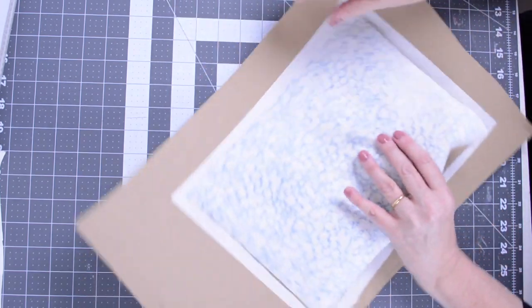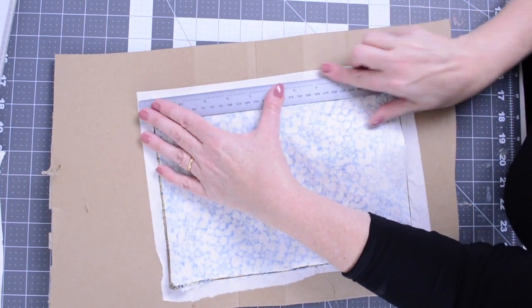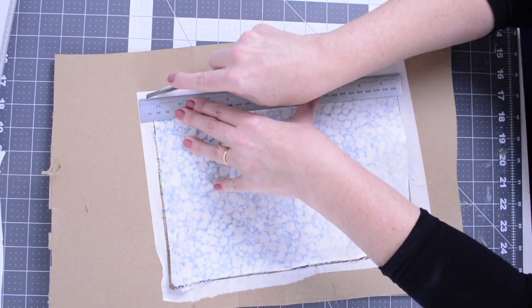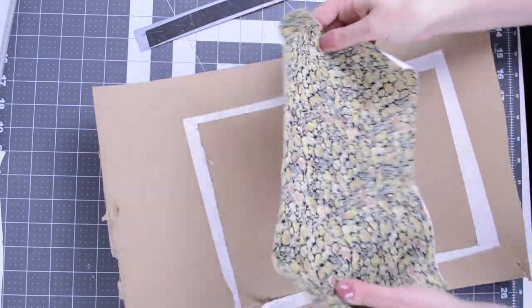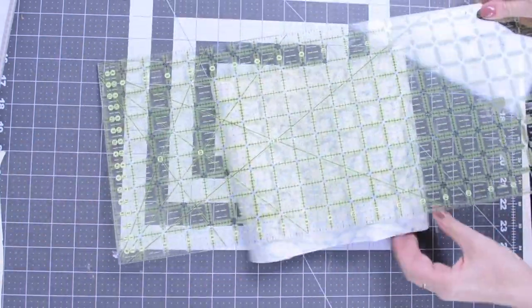And then with a ruler and a sharp craft knife, go along all four edges and cut away the fabric. You'll be left with a small border of the paper on the cardboard.